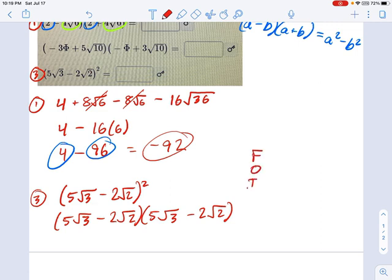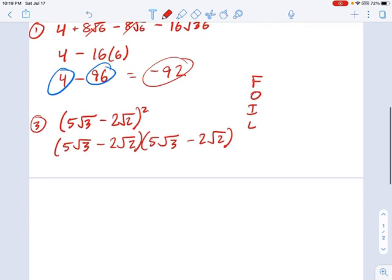Remember first, outer, inner, last, just like I did previously. So 5 radical 3 times 5 radical 3 makes 25 radical 9. Then we have 5 radical 3 times negative 2 radical 2. That becomes minus 10, 5 times negative 2. And root 3 times root 2 is root 6.